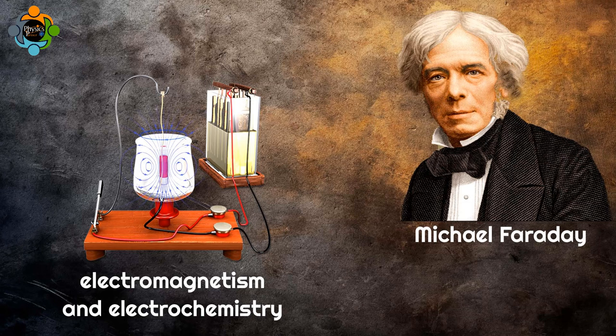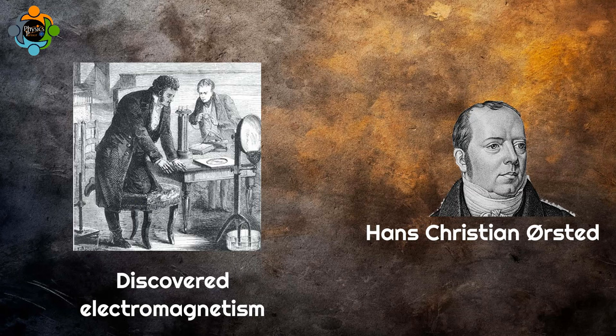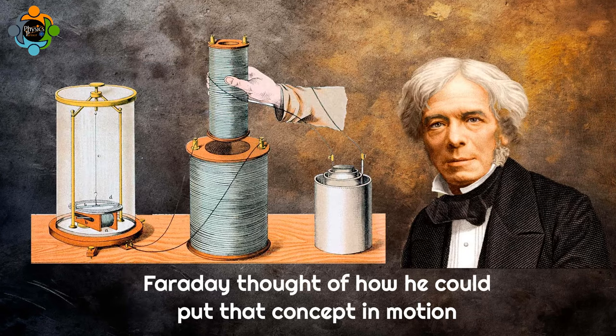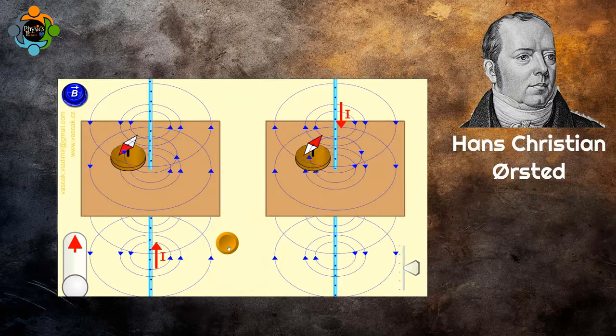This was one year after Hans Christian Ørsted revealed that he discovered electromagnetism. Faraday thought of how he could put that concept in motion. According to Ørsted, when a current is allowed to flow through a wire, a magnetic field is produced around that wire.